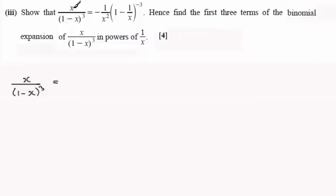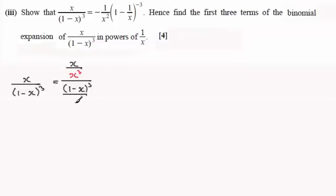If I divide the top by x cubed — let's just do that in red — then I must divide the bottom of the fraction, the (1 minus x) cubed, also by x cubed. So let's put that in, divided by x cubed. Now when we look at x over x cubed, that's going to reduce down to 1 over x squared. That's what I noticed when I was looking at how to start this.